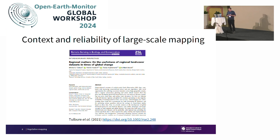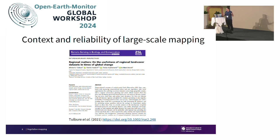One thing I also want to mention — and I know this is maybe controversial because we all like our big global maps — but I really would like to highlight the value beyond the global scale. Often when you produce a map and show it to people in local regions, they zoom in behind their backyard and say, 'oh, this pixel is wrong.' And then suddenly all the trust in the map is lost. It can be much more beneficial to develop regional estimates of land cover and habitat and vegetation types, where you can control the local context.